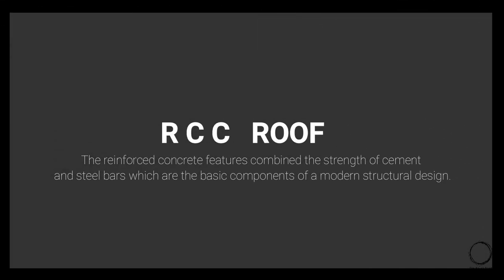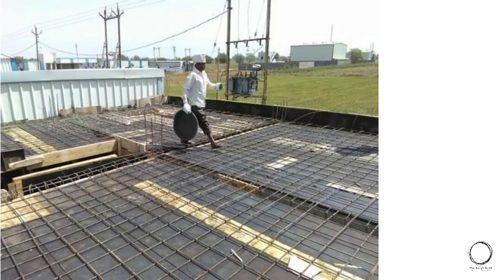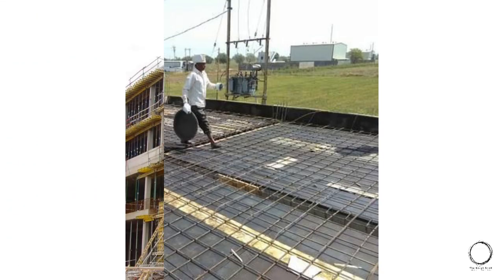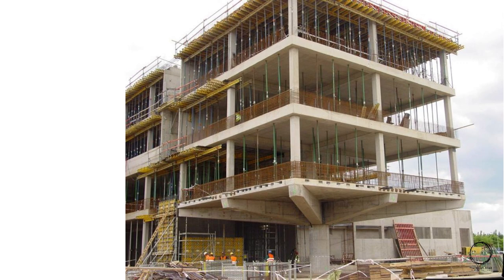The third type of roofing is RCC roof, where reinforced concrete combines the strength of cement and steel bars, which are the basic components of modern structural design. We have already covered RCC earlier in the video.